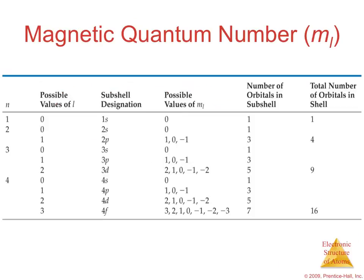So here's just a table that is actually table 6.2 in your book on page 229. And this shows your possible values of n, l, the subshell designation, your possible values of m sub l, and then it shows you your orbitals and your total number of orbitals in the shell. So this is really important to look at to make sure that you know how to determine n, l, m sub l, and go from there.